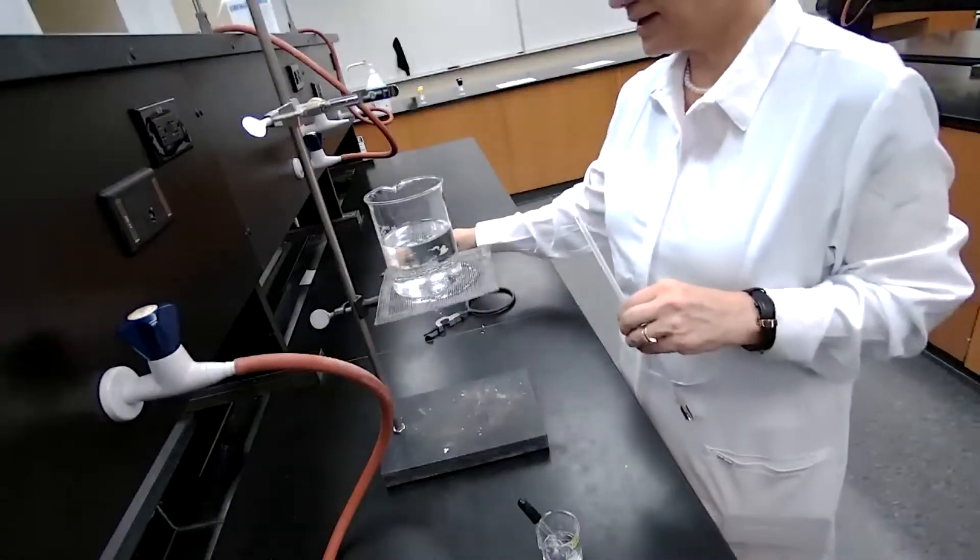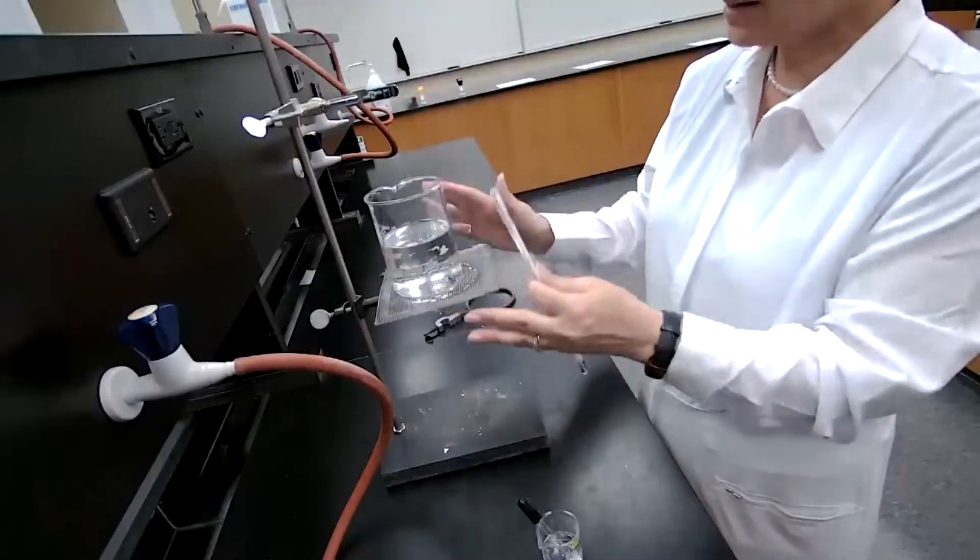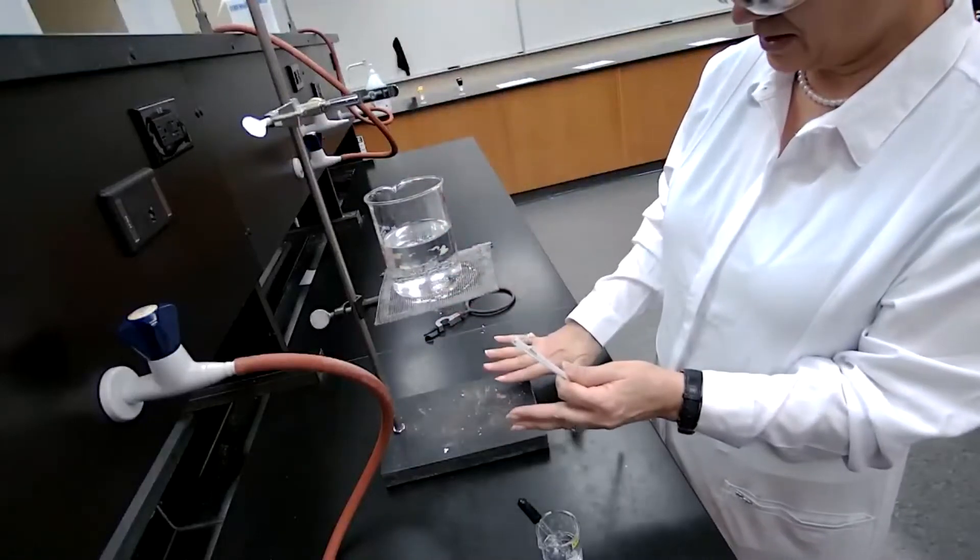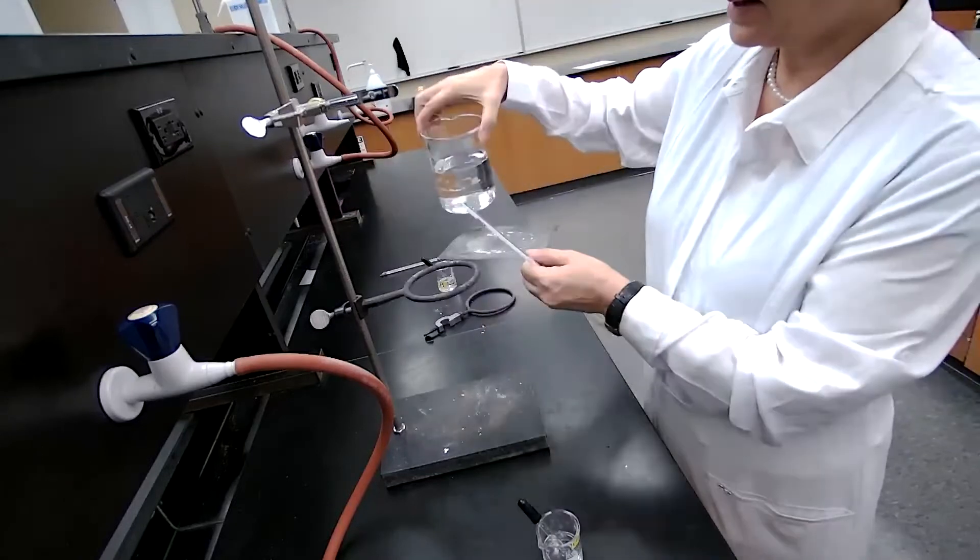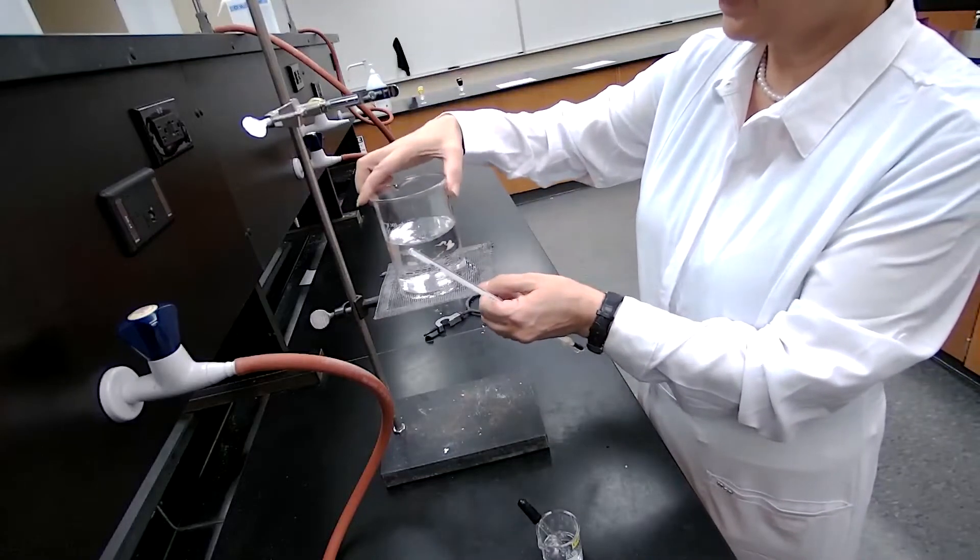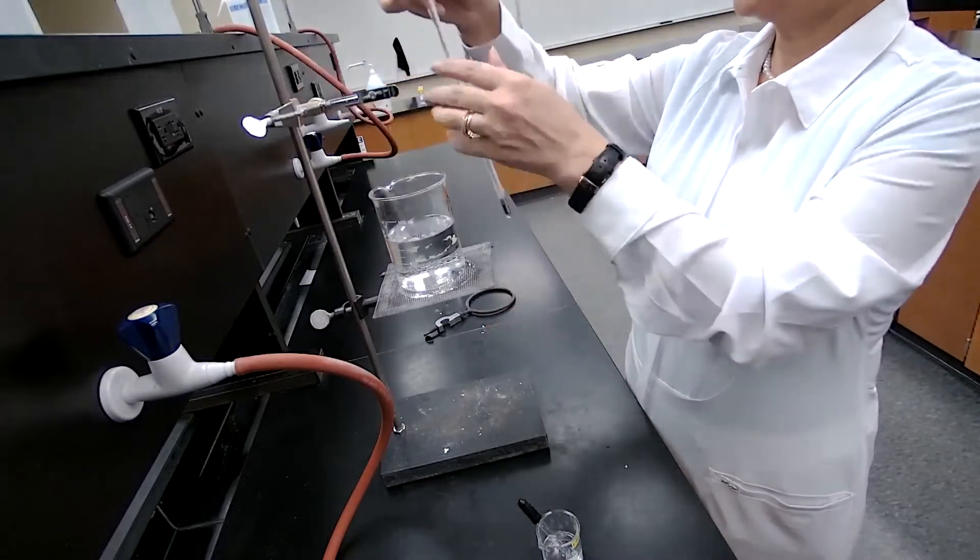To measure the boiling point, we set up the hot water bath setup. We are using the ring stand, iron ring, and a wire gauze on it. We will use a thermometer clamp to hold the thermometer.